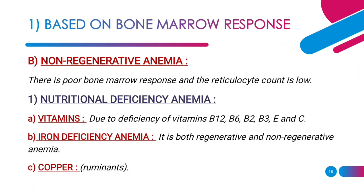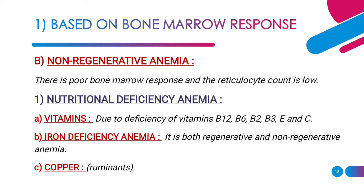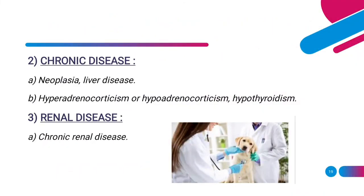Based on bone marrow response, non-regenerative anemia is characterized by poor bone marrow response to the decrease in RBC, with very low reticulocyte count. It is commonly observed in nutritional deficiency anemia such as deficiency of vitamin B12, B6, B2, B3, vitamin E, and vitamin C — all of which are required for the formation and maturation of erythrocytes. Iron deficiency anemia is both regenerative and non-regenerative. Copper deficiency also leads to non-regenerative anemia in ruminants. Chronic diseases like neoplasia, liver diseases, hyperadrenocorticism, hypoadrenocorticism, and hypothyroidism all lead to non-regenerative anemia. Renal diseases like chronic renal disease also lead to non-regenerative anemia.